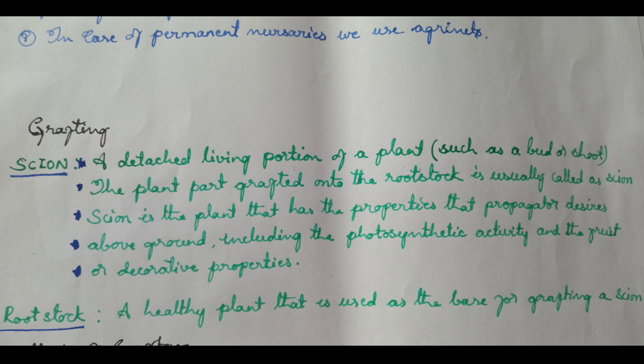All these graftings can be well understood if you know two terminologies: scion and rootstock. The scion is a detached living portion of a plant — such as a bud or shoot — that is joined to a stock in grafting. The rootstock is a healthy plant that is used as a base for grafting a scion.